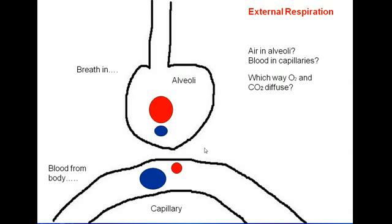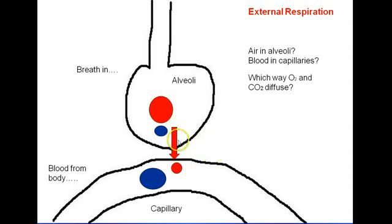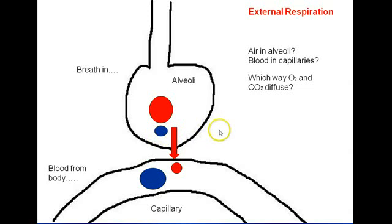So which way are these molecules going to go? Oxygen is going to go from high concentration or partial pressure in the alveoli to a low concentration in the capillaries — oxygen will diffuse from the alveoli into the bloodstream, high to low. CO2 is going to go from a high concentration or partial pressure in the capillaries to a low concentration or partial pressure in the alveoli.